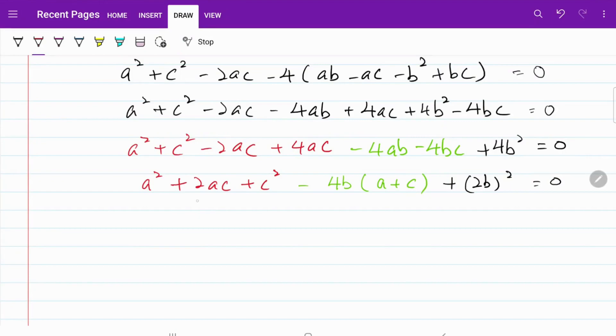If you take a closer look at the red color part, you'll notice that we can actually write that as (a + c)². Everything else remains the same. So I have (a + c)² - 4b(a + c) + (2b)² = 0. And if you remember from the beginning of the video, we said that we are trying to establish the terms a + c and 2b into the equation.